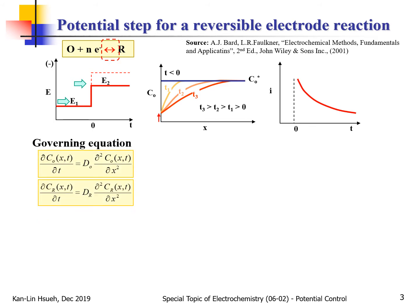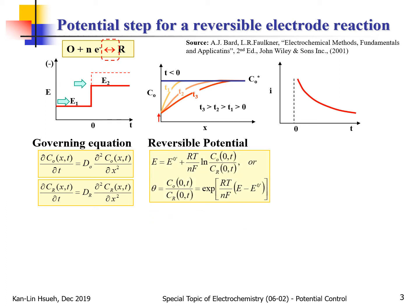The governing equation for the O species is the same as before — an unsteady-state material balance that is a function of both time and location. But here we also have to consider the R species, because R is generated at the electrode surface and diffuses out from the electrode into the solution. So we must consider conservation of the R species. At the electrode surface, the electrode potential can be described by the Nernst equation: E as a function of the concentration of O and concentration of R at the electrode surface at X equal to zero.